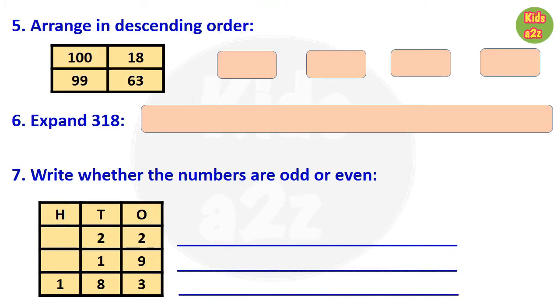For question number 5, kids need to arrange this number in descending order. So the answer is 100, 99, 63, then 18.